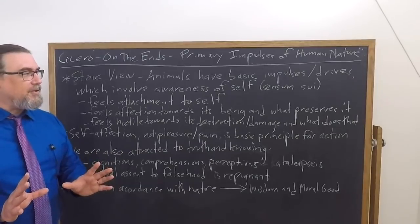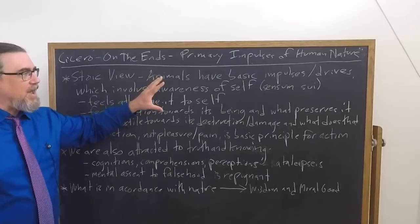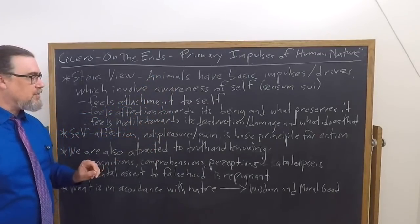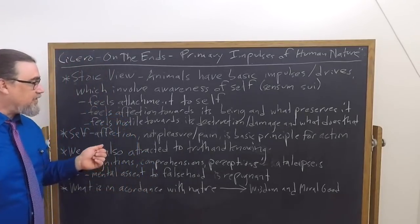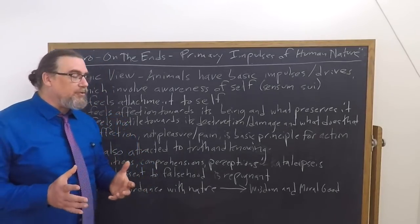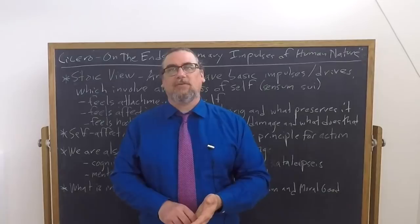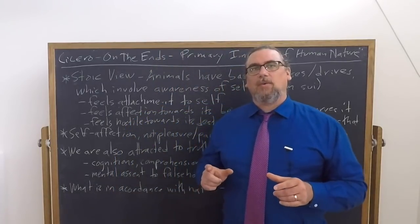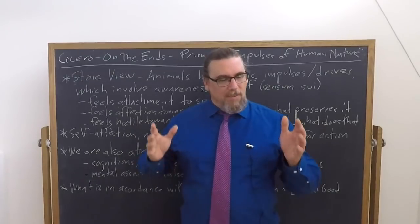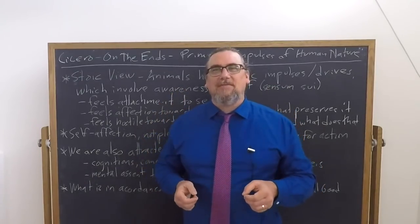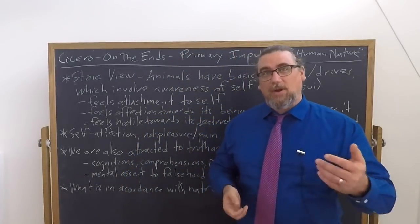He also tells us something quite interesting, and you can see a parallel here between the realm of action and the realm of knowledge, in terms of affection, how it is that we feel about things. He tells us that mental assent to falsehood is repugnant. It's something that repulses us, that drives us away. When we realize that we've got things wrong, unless we're screwed up, we don't double down and say, oh man, I know this is wrong, but I'm going to keep believing this anyway.